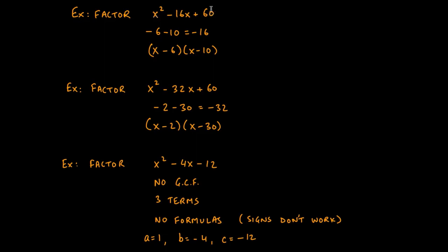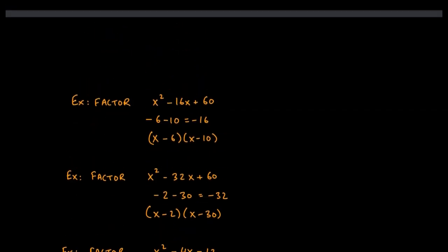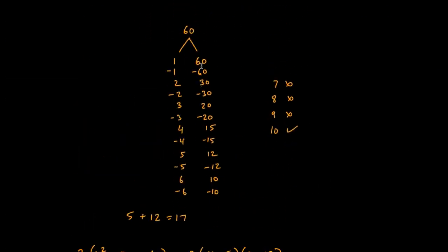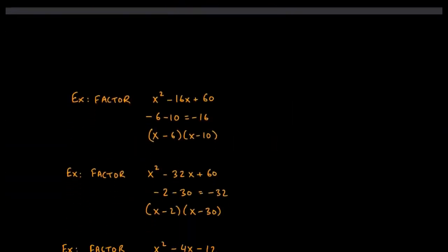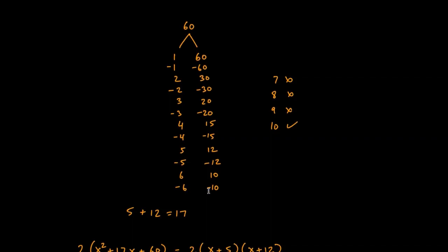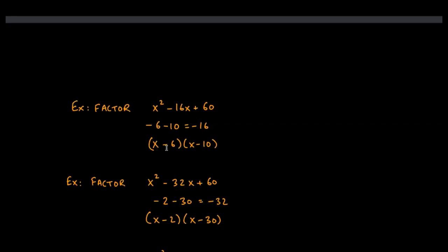Let's look at a couple more using the same AC number. For x² - 16x + 60: there's no GCF, the formula doesn't work because 60 isn't a perfect square, we have three terms, and a is 1 — so we use the AC method. That's another benefit of drawing the entire factor chart at once: we can keep referencing it again and again. We want factors that add to -16, and (-6) + (-10) = -16. So the answer is (x - 6)(x - 10).